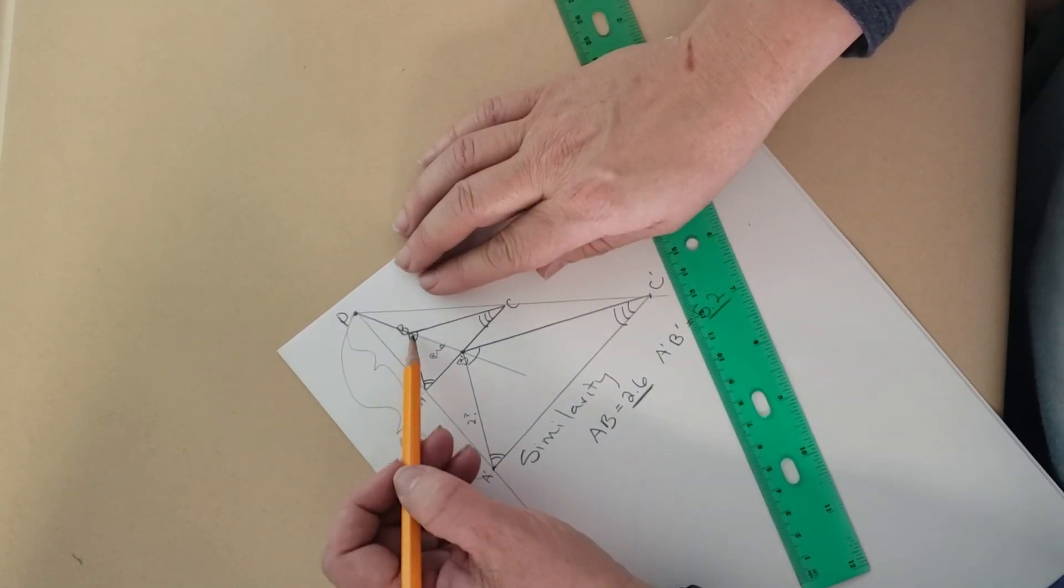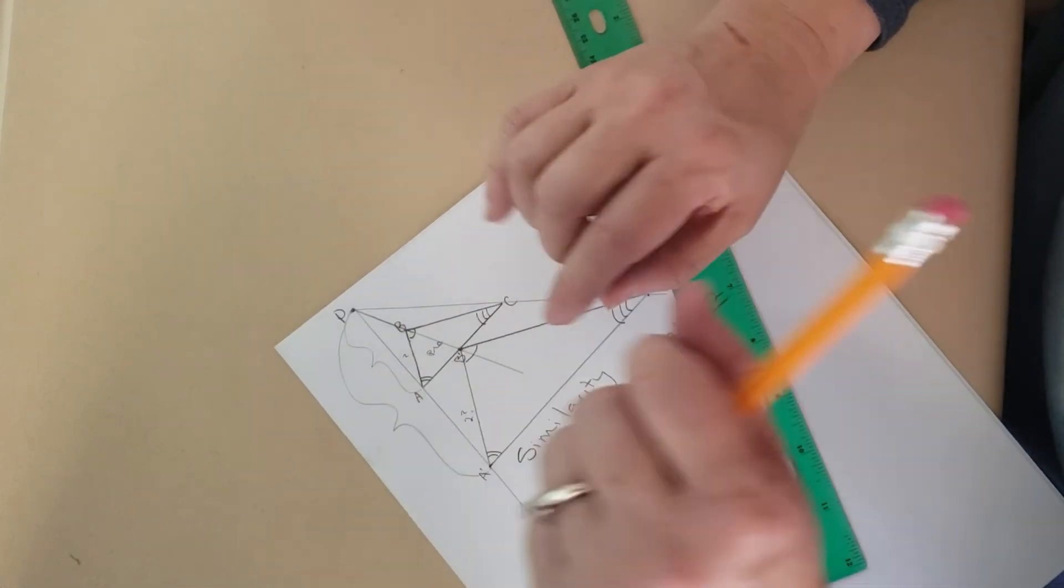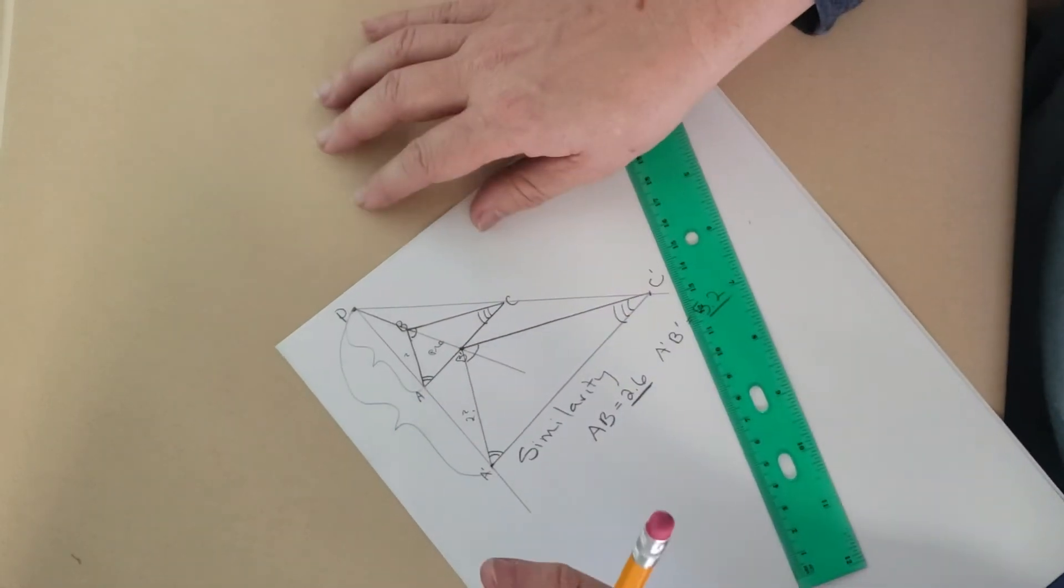And when you have similarity, what you have is angle, angle, angle congruence, but not side congruence. Very cool.